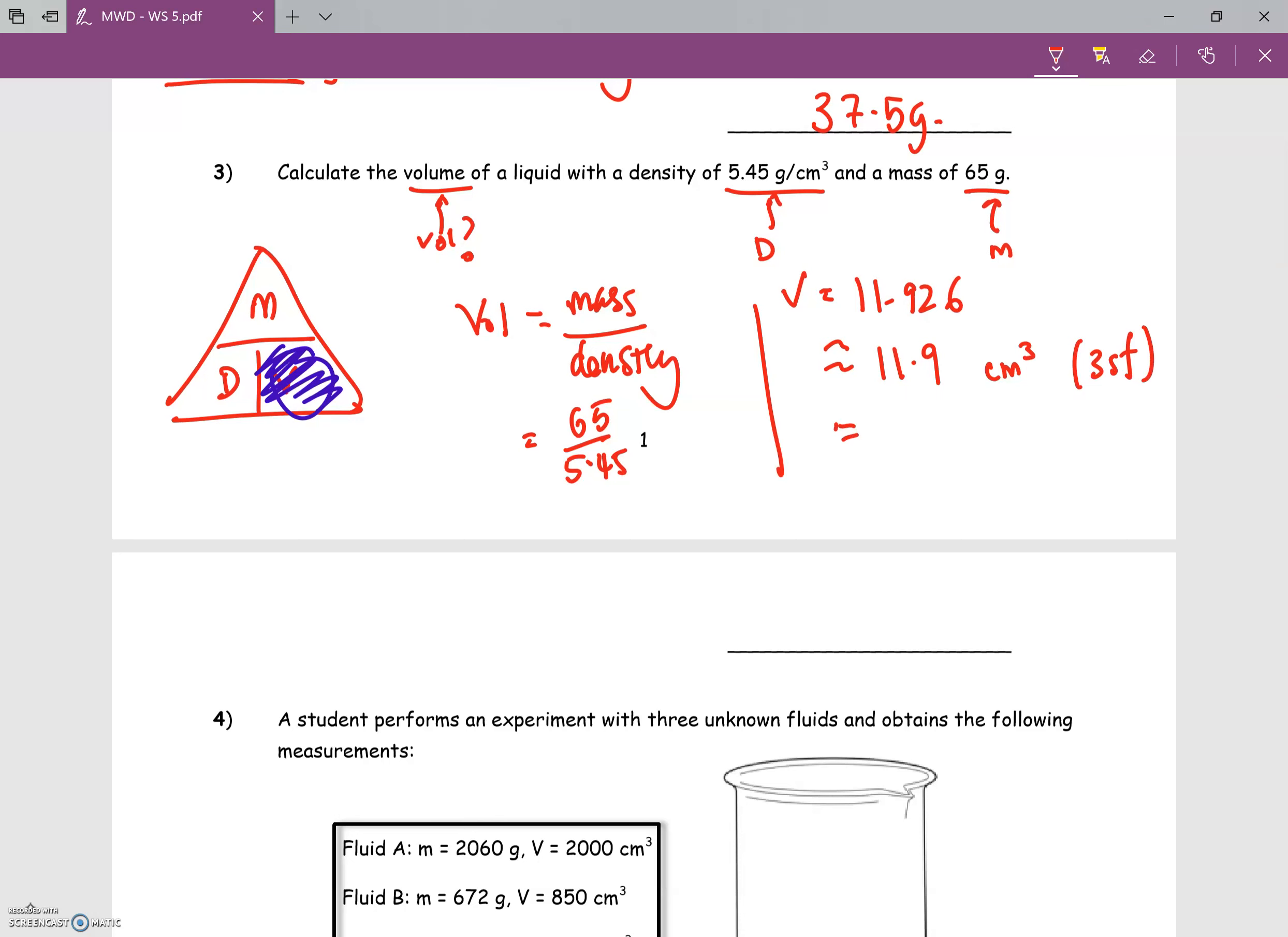Those of you who round off to 2 significant figures, it will be 12 cm³. This is in terms of 2SF.